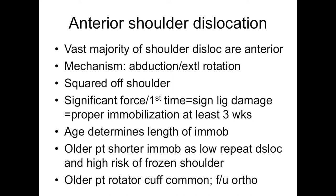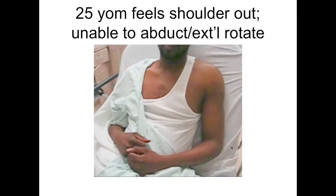The older patient — we're concerned about developing stiffness, and the older person is also less likely to have a re-dislocation, so they won't be immobilized as long. Just remember: older patients, almost all of them, when they dislocate their shoulder they're going to have a rotator cuff injury. So they all need to follow up with ortho. They may have had it before the injury, or they may have sustained it with that shoulder dislocation. You really need to think about that.